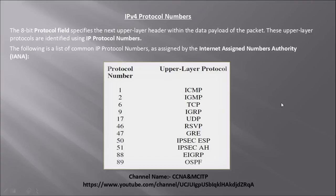This is what I tried to bring here. The following is the list of common IP protocol numbers as assigned by the Internet Assigned Numbers Authority, which is also known as IANA. As you can see here, we have on one side the protocol number and on the other side the upper layer protocol.